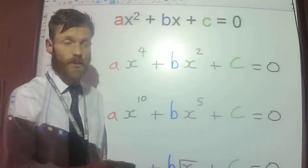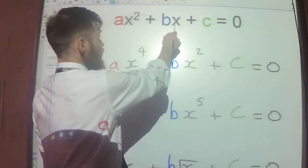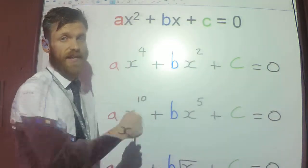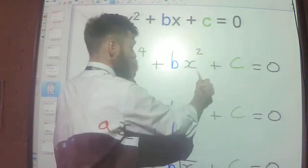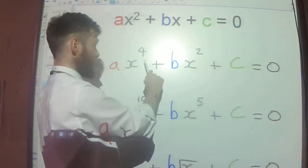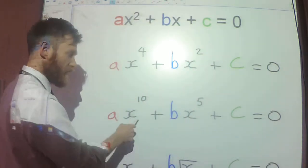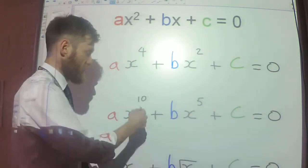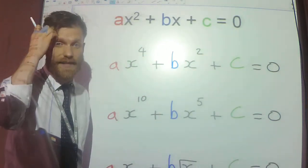We know that quadratic equations usually look in that form, where you have a squared part at the front, the x part in the middle, and a constant on the end. So this is something that might look like a hidden quadratic. The reason I know this is a hidden quadratic is because the term in the middle, when I square that, I get the term at the front. When I do x squared, squared, I get x to the power 4, and I've got a constant on the end.